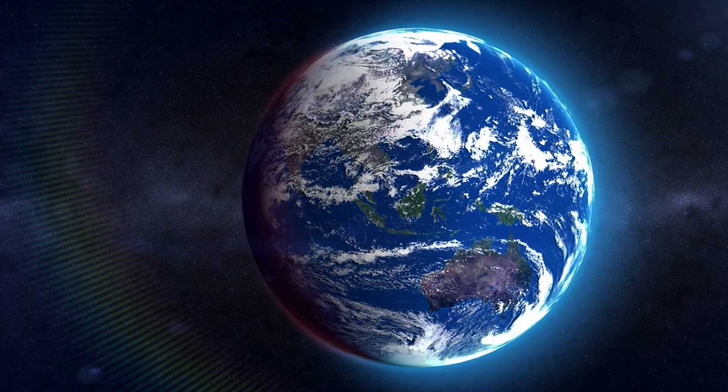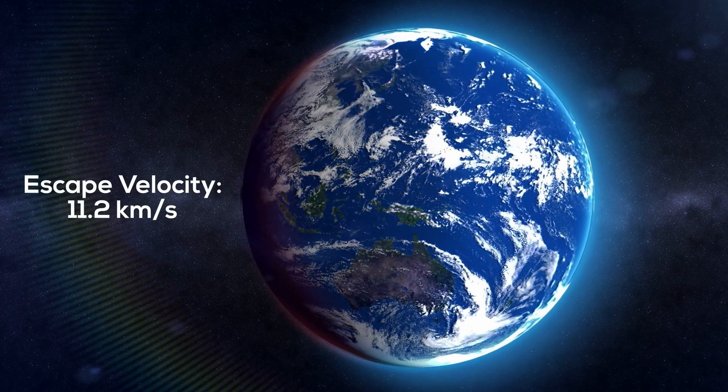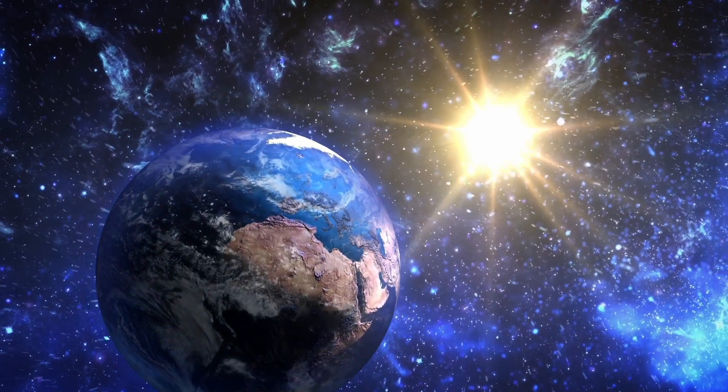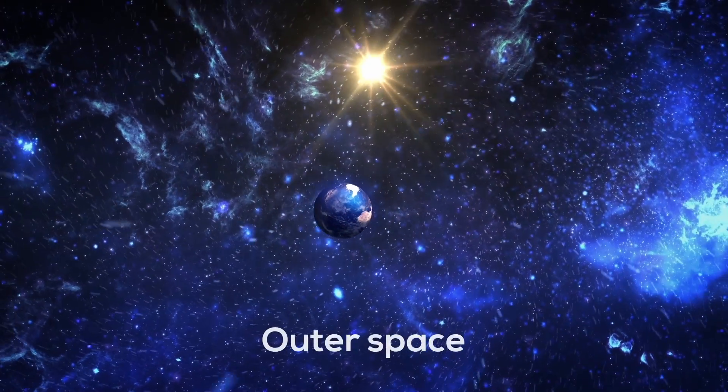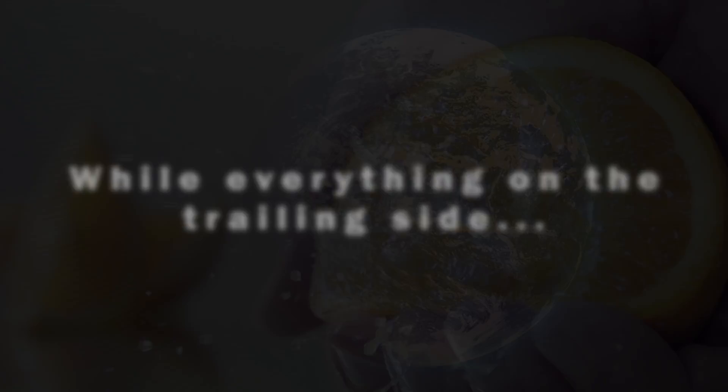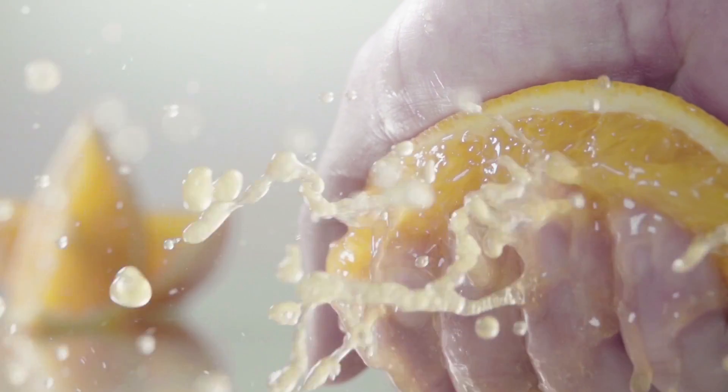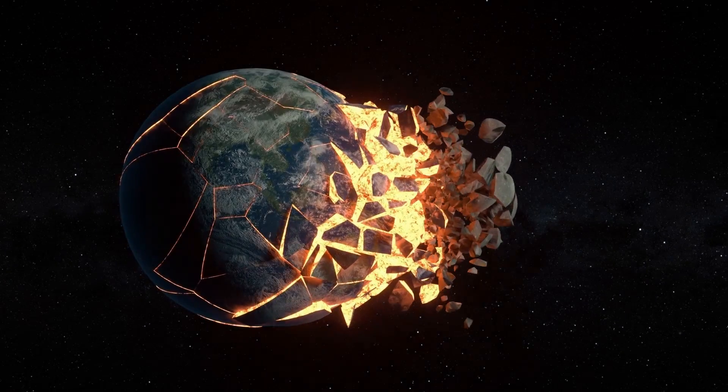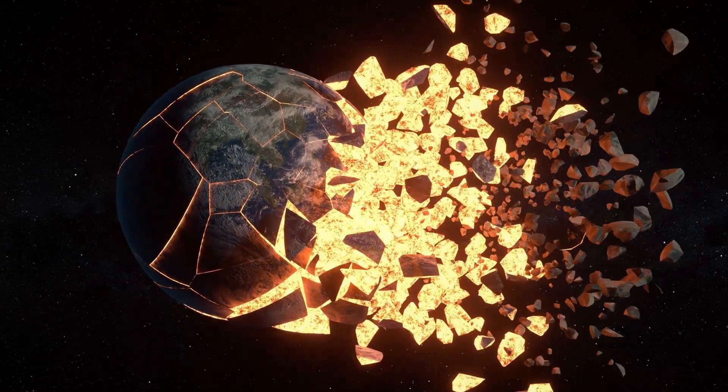Considering that Earth's escape velocity is 11.2 kilometers per second, the leading side of the Earth would be tossed into outer space by the inertia, while everything on the trailing side would be squashed by a formidable force pressing them against the Earth's surface. The result would be utter destruction in a matter of seconds.